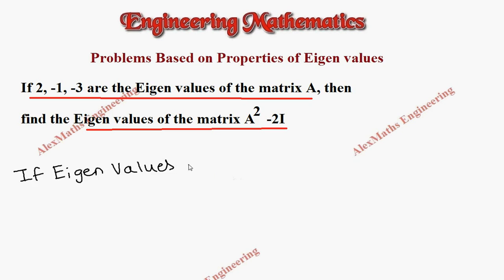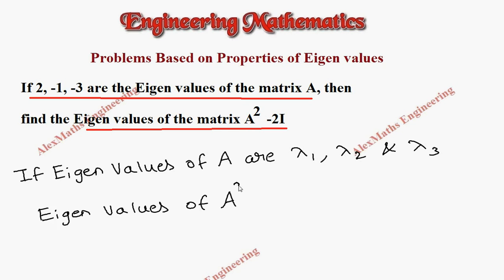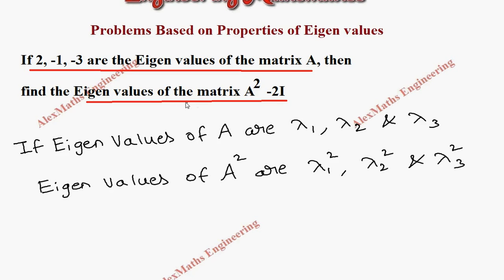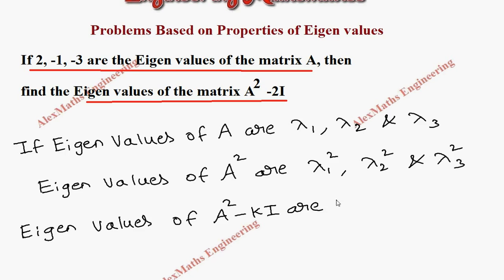Suppose if the eigenvalues of matrix A are lambda 1, lambda 2, and lambda 3, then the eigenvalues of A square will be lambda 1 square, lambda 2 square, and lambda 3 square. In general form, the eigenvalues of A square minus kI will be lambda 1 square minus k, lambda 2 square minus k, and lambda 3 square minus k.